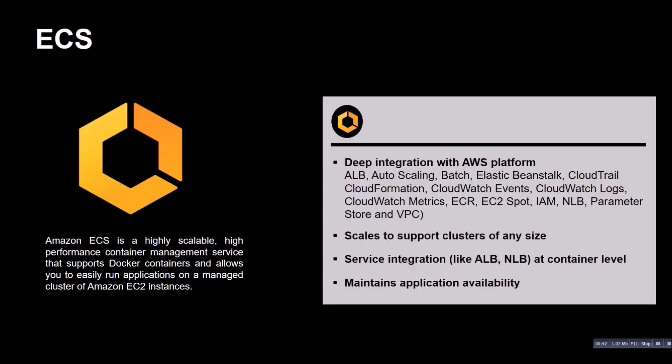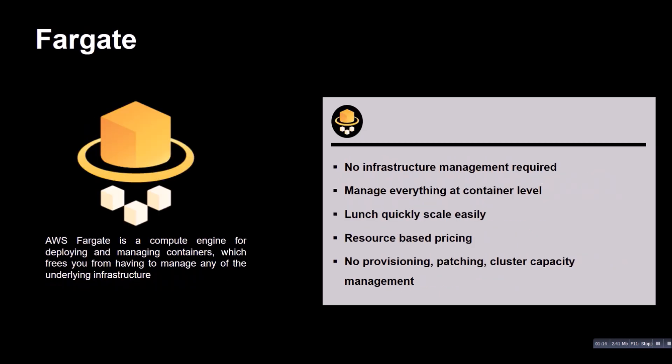ECS is a highly scalable, high-performance container management service that supports Docker containers and allows you to easily run applications on a managed cluster of Amazon EC2 instances. In ECS you have to define a cluster, think about instance types and cluster size. In Fargate, you don't have to bother with this anymore — you don't care for the EC2 instances, you just focus on your services.